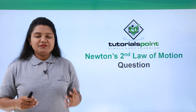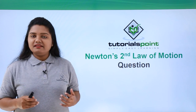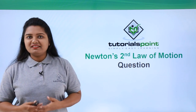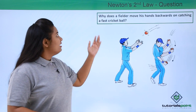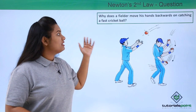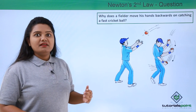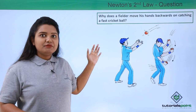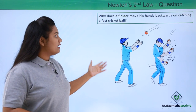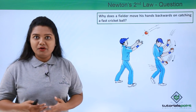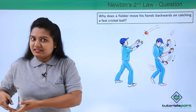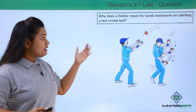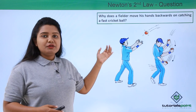Hello everyone. In this video we'll be answering a tricky question based on Newton's second law of motion. The question is: why does a fielder move his hands backwards when catching a fast cricket ball? We've noticed many times that whenever a fielder catches a ball, he moves his hands backwards — he doesn't generally catch the ball directly.